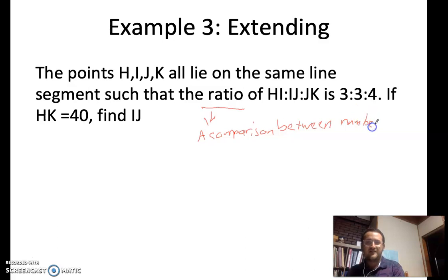It tells us that the ratio of HI to IJ to JK, where H, I, J, and K are on the same line, is 3 to 3 to 4. So I'm just going to draw the picture here. We start at H, then we go to I, and then J, and then finally K.